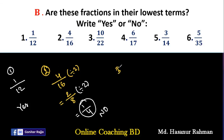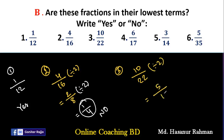Number 3: if we look at 10/22, we can see that 10 and 22 are both even numbers. That means we can divide 10 and 22 by 2. So 5/11 will be the lowest term of 10/22.